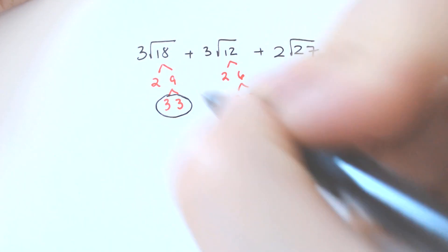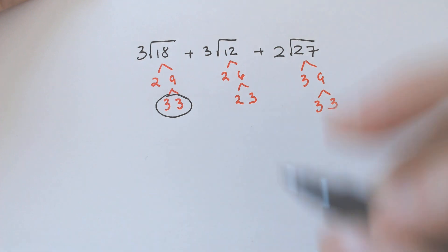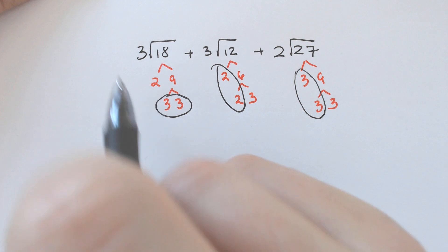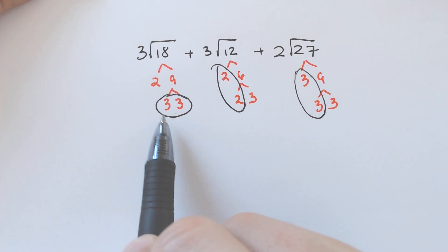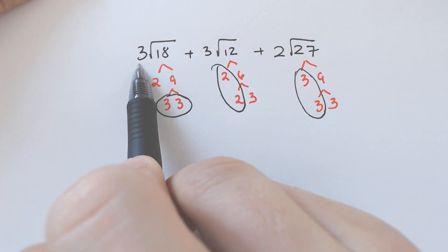We got a pair of 3s. We got a pair of 2s on this one, and we got a pair of 3s on this one as well. So the number you circled goes on the outside and multiplies with what is already there.